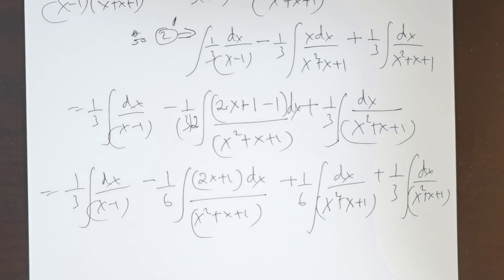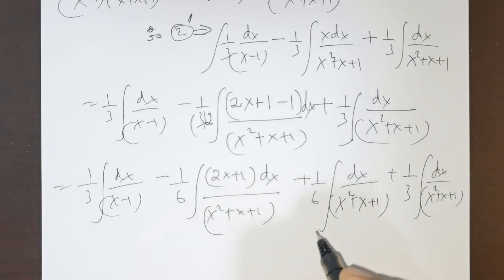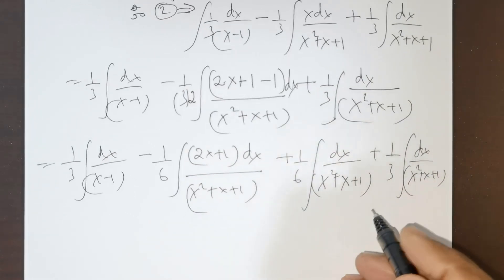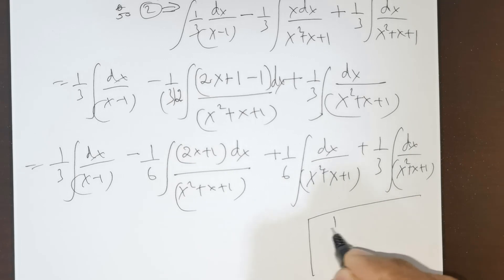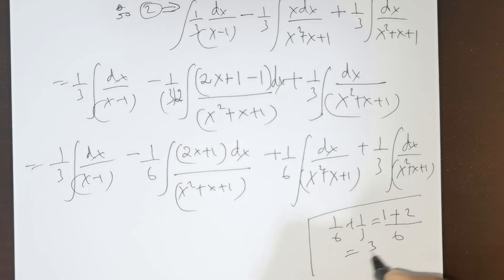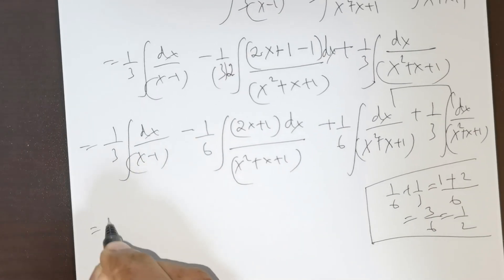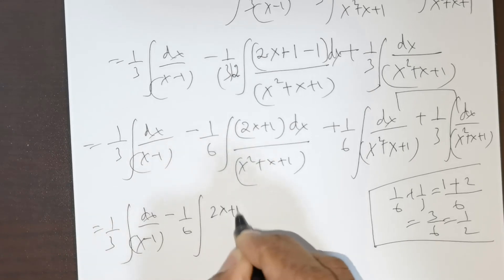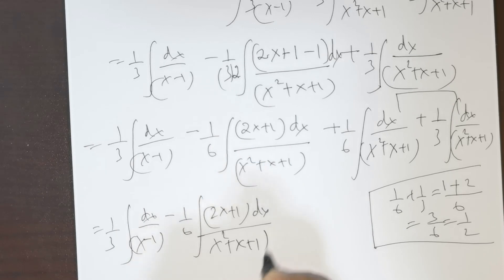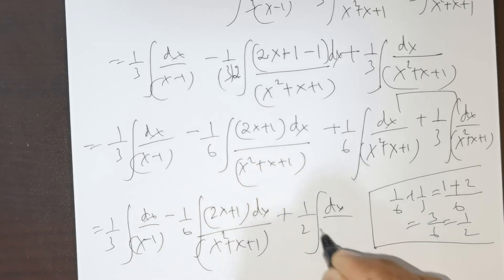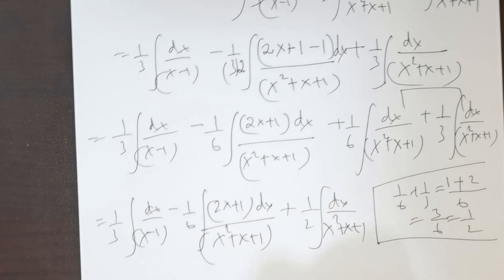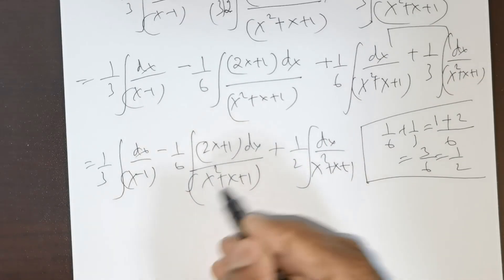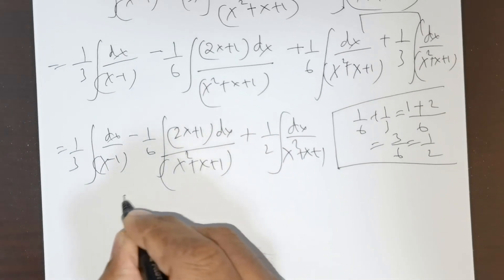So combining all terms, I now have: (1/3)∫dx/(x minus 1), minus (1/6)∫(2x plus 1)dx/(x² plus x plus 1), plus (1/2)∫dx/(x² plus x plus 1).